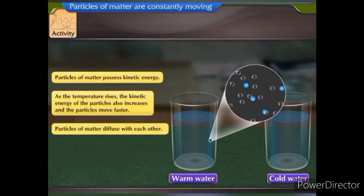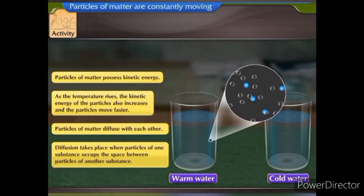This proves that particles of matter possess kinetic energy. As the temperature rises, the kinetic energy of the particles also increases and they move faster. Particles of matter diffuse with each other. Diffusion takes place when particles of one substance occupy the spaces between particles of another substance.